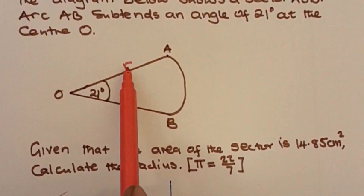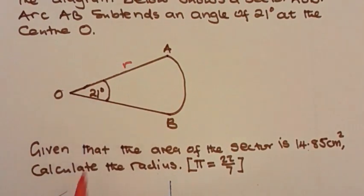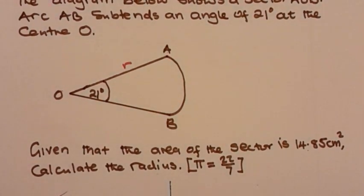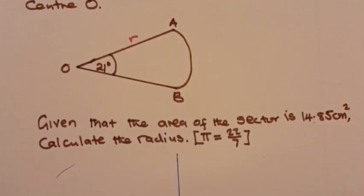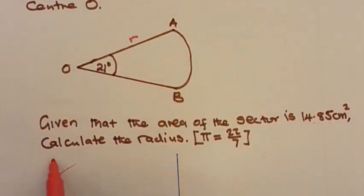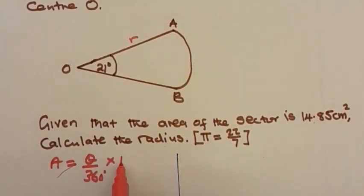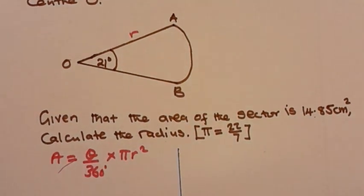They want you to find the radius given the area and the central angle. To find the radius we are going to use the formula for finding the area of a sector. From the previous video, the area of a sector is equal to theta — the central angle — divided by 360 degrees, times pi r squared, which is the area of the full circle.